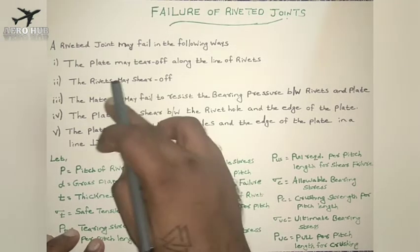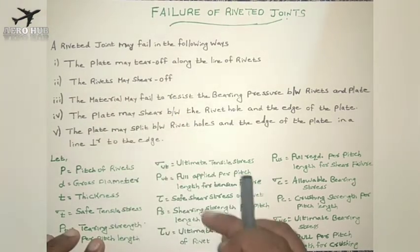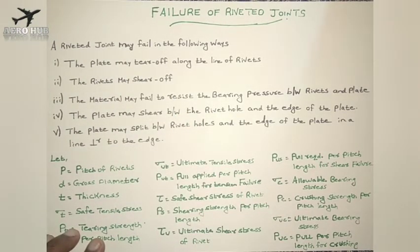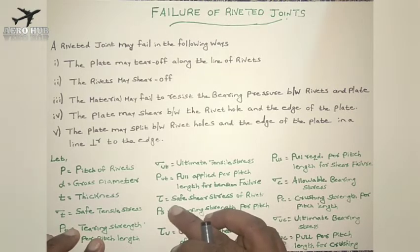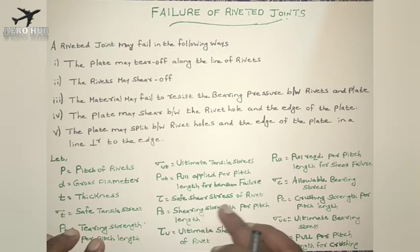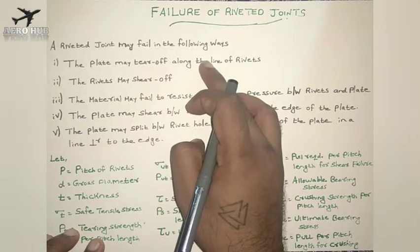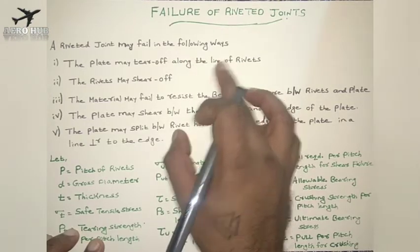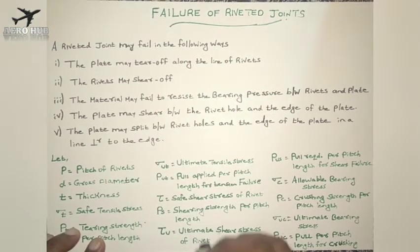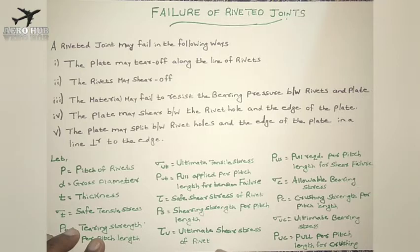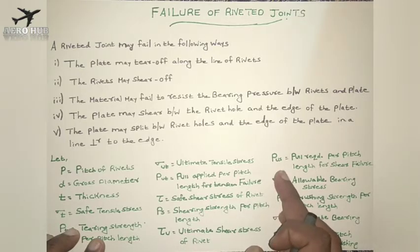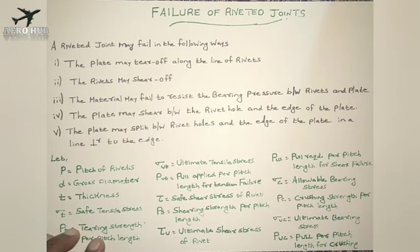When we consider the second failure — the rivet may shear off — this will be concerned with the rivet structure. Tau is the safe shear stress of the rivet. Tension failure is for the plate and rivet shear failure is for the rivets. P_s is the shearing strength per pitch length. Tau_u is the ultimate shear stress of the rivet. P_us is the pull required per pitch length for shear failure.